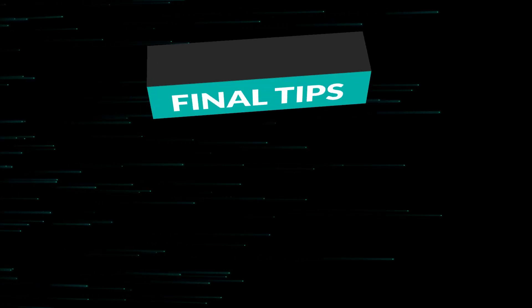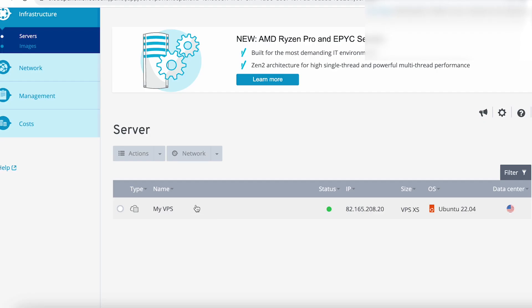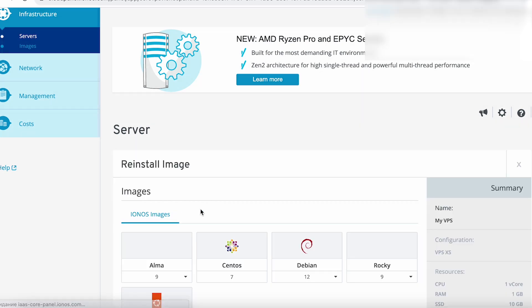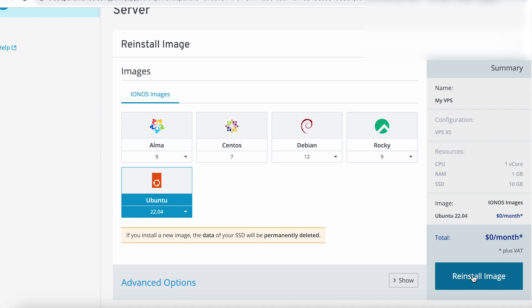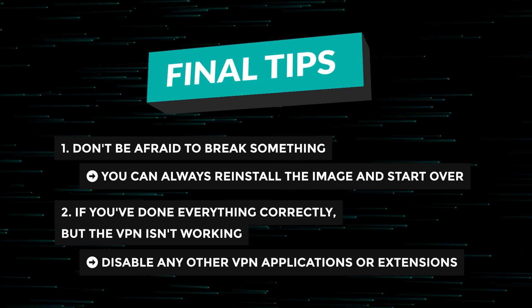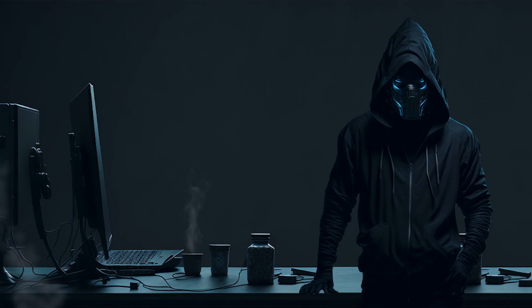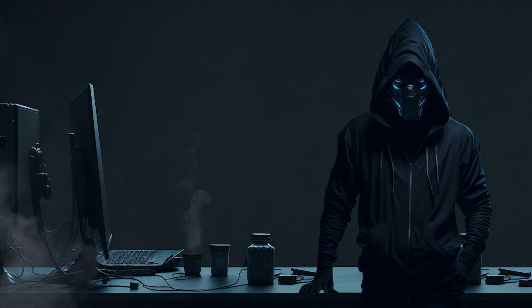Finally, a few tips and a bonus. First, don't be afraid to mess something up during server setup — even if you can't connect to the server, you can always reinstall the image and start over from the server control panel by clicking Actions and Reinstall Image, then choosing the operating system. Second tip: if you've done everything correctly but your IP doesn't change and traffic isn't going through the VPN, check if you have other VPN applications or browser extensions enabled, as they could be blocking it. As a bonus, I offer a guide on quickly setting up Shadowsocks 2022 and XTLS Reality without a control panel — available in the additional materials in my Telegram channel. You've learned how to set up your own VPN, giving you full control over your Internet connection with a high degree of anonymity and security without unnecessary costs.